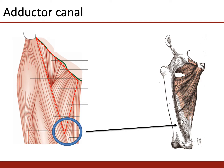The adductor canal begins at the apex of the femoral triangle and ends at the adductor hiatus in the adductor magnus muscle. The apex of the femoral triangle is at the medial border of the vastus medialis. The hiatus in the adductor muscle permits the femoral artery and the saphenous nerve to then pass through into the joint.